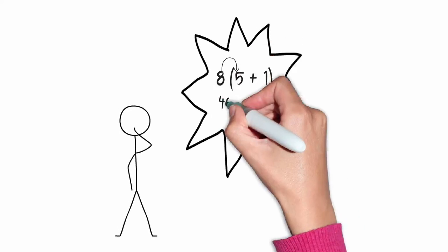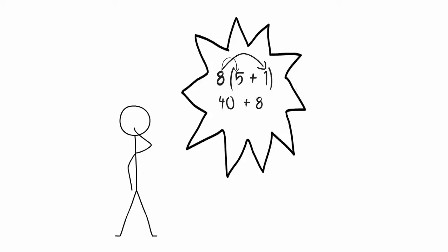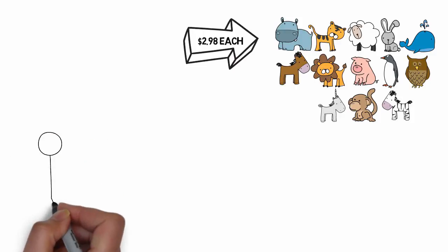Eight times five is forty, plus eight times one is eight, giving us an answer of forty-eight. Even though I wrote this on paper, I could actually do that in my head and quickly come up with the answer. Another situation where you often find using the distributive property helpful is when you have to multiply a lot of the same number.